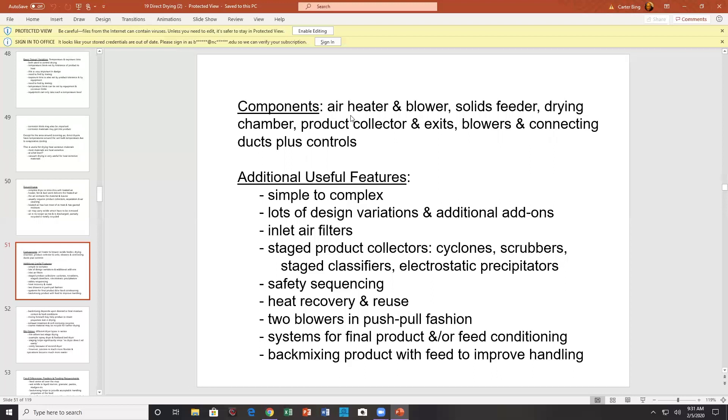So you have heater blowers, solid feeders, drying chamber, product collectors, and excess blowers, and connecting back work plus controls. You can have additional features, simple to complex, lots of design variations out there. You might try inlet air filters. You might try staged product collectors like cyclones, usually the first cyclones taking out most of the problem. Then you follow it with scrubbers, electrostatic precipitators, bag houses, or stage classifiers.